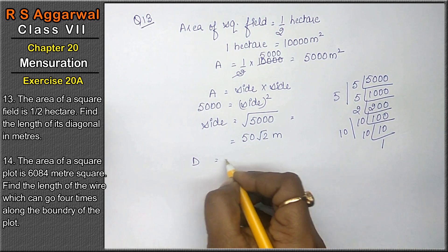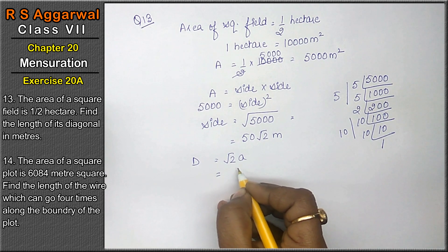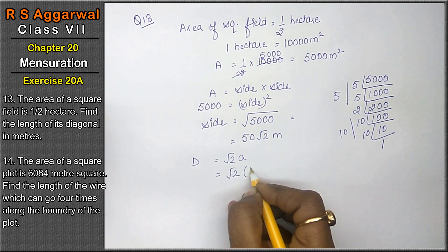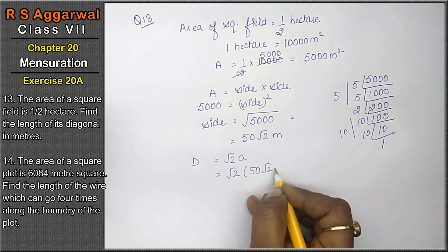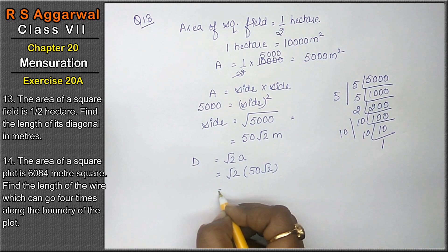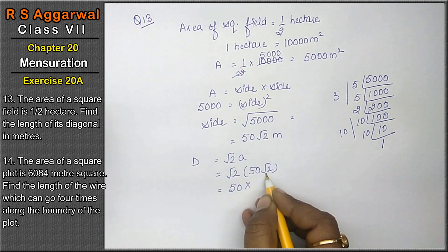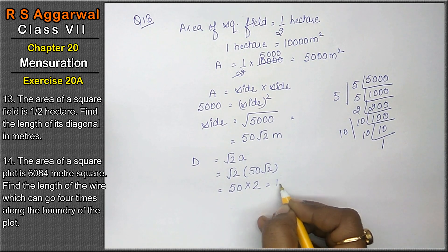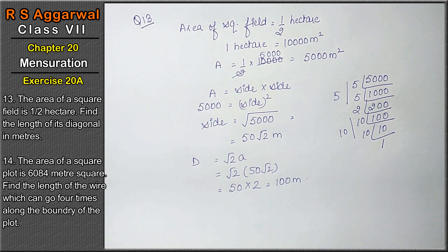अब diagonal का formula होता है √2 × A, where A is the side. तो diagonal = √2 × 50√2 = 50 × 2 = 100 meters is the diagonal.